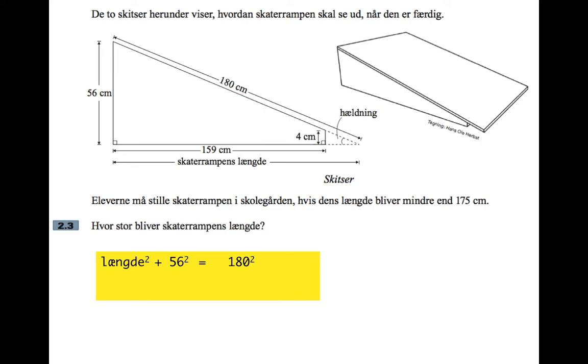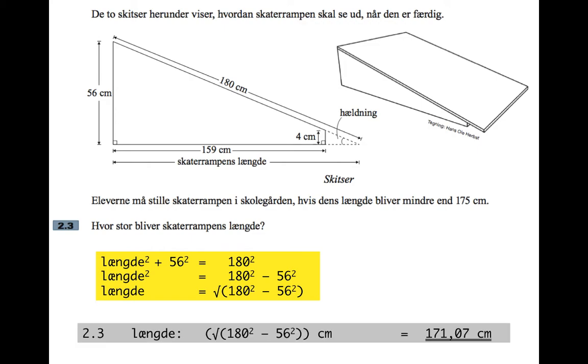So the two shortest sides squared add up to the longest side squared. So the thing we're looking for, the length squared plus 56 squared makes 180 squared. So from that we can figure out what the length is. We'll take away 56 squared from both sides. So the length squared is 180 squared minus 56 squared. So the length itself is the square root of that. And then when you do that, it comes to 171 and a bit.